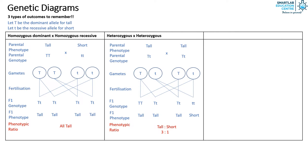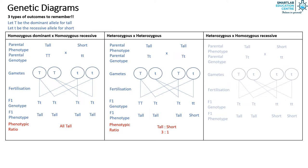In the last scenario where one parent is heterozygous and the other is homozygous recessive, the genetic diagram is as such. The phenotypic ratio of the F1 generation would be one to one, hence an equal distribution of phenotype.